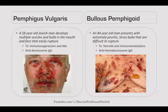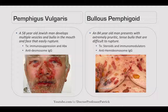Pemphigus vulgaris: a 58-year-old Jewish man develops multiple vesicles and bullae in the mouth and face that easily rupture. Treat with immunosuppression and antibiotics. The antibody to know is anti-desmosome IgG. Compare with bullous pemphigoid: an 84-year-old man presents with extremely pruritic, tense bullae that are difficult to rupture, with a negative Nikolsky's sign. Treat with steroids and immunomodulators. The antibody of note is anti-hemidesmosome IgG.